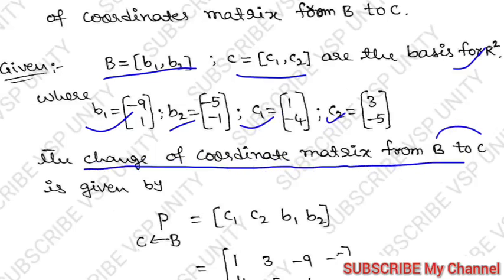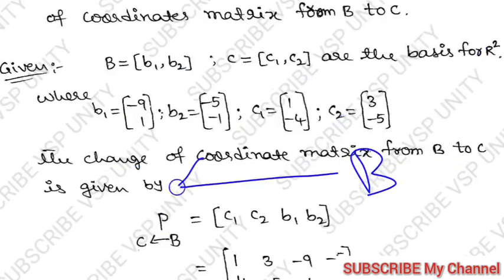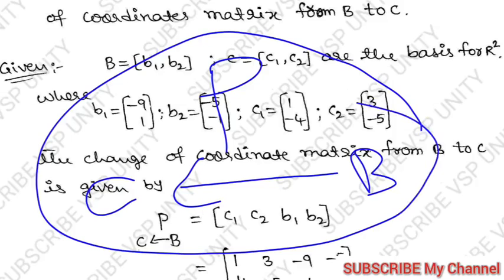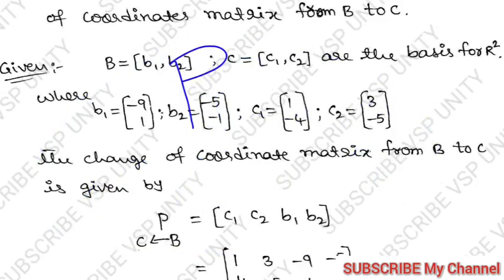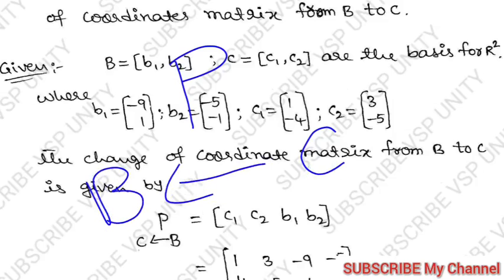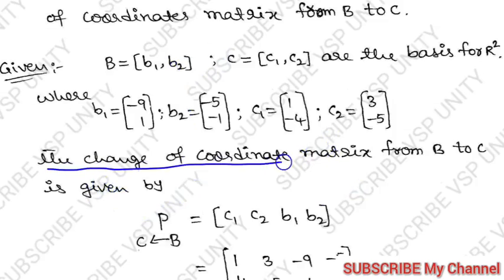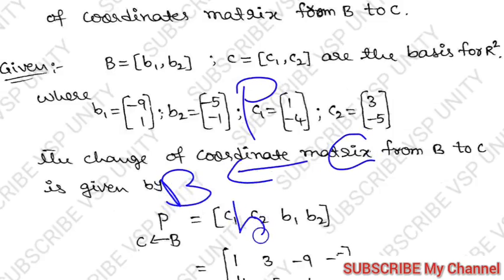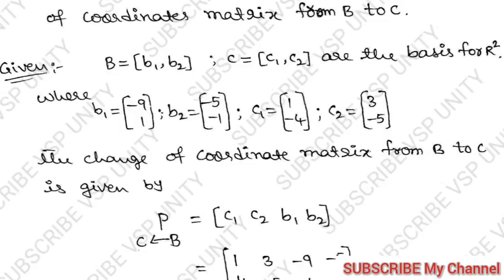Now we have to find the change of coordinate matrix from B to C. The notation for the change of coordinate matrix is P with subscript B to C, written as P_{B→C}. So we write B here and C here. The change of coordinate matrix P_{B→C} is formed by writing C1, C2 first, then B1, B2.